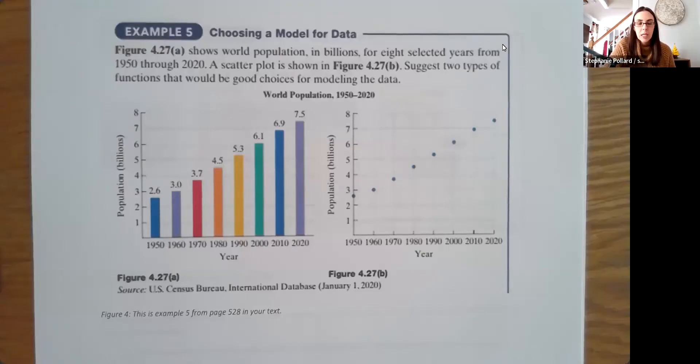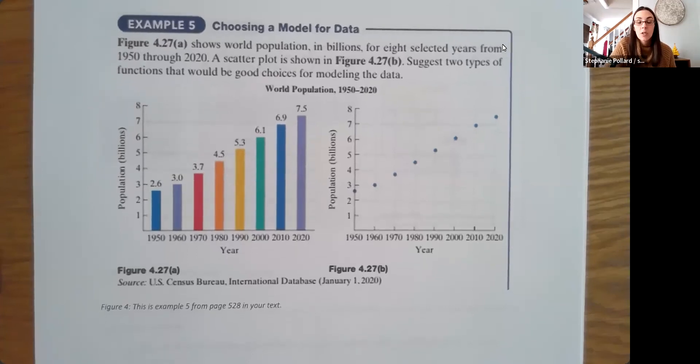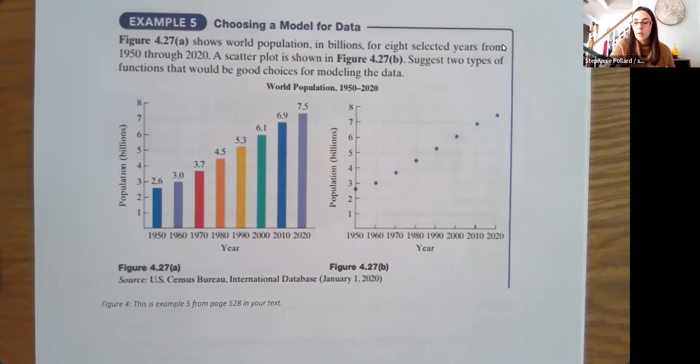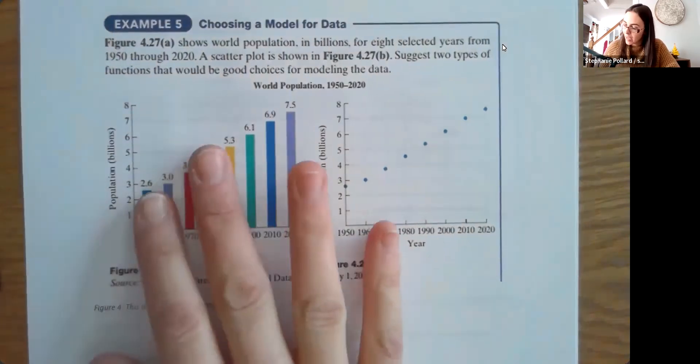Okay, let's look at a couple more examples. So this is example five from your text, and it shows the world population in billions for eight selected years from 1950 through 2020. So you have the bar graph on the left, and then you have the scatter plot on the right.